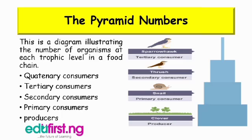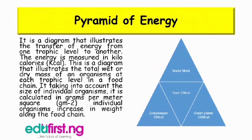The next slide is on pyramid of energy. It is a diagram that illustrates the transfer of energy from one trophic level to another; the energy is measured in kilocalories. This is also a diagram that illustrates the total weight or dry mass of an organism at each trophic level in a food chain. It takes into account the size of individual organisms and is calculated in grams per meter square. Individual organisms increase in weight along the food chain.